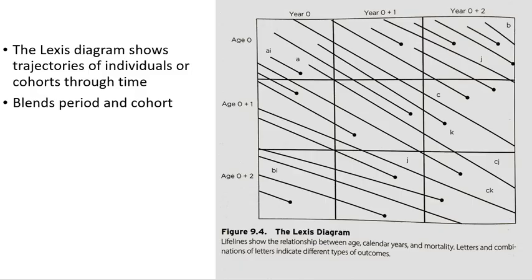Another useful tool when thinking about the cohort versus the period life table is what's called the Lexis diagram, where we see trajectories of individuals or cohorts through time. It's sort of a mixture of period and cohort. This is the time frame, and this is the age group within the time frame, and these are the individual or group trajectories. It's a more visual representation than a table.